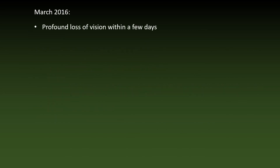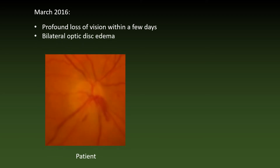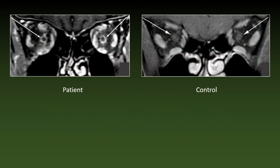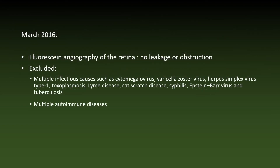About six weeks later, the patient had a profound loss of vision within a few days. Fundoscopic examination revealed bilateral edema of the optic discs; note the hemorrhage compared to a normal optic disc on the right. The diagnosis of optic neuritis was confirmed by MRI — note the peripheral enhancement of the optic nerves compared to a normal control. Fluorescein angiography of the retina did not show any vascular disease, leakage, or obstruction. Multiple infectious causes — CMV, varicella zoster, herpes simplex virus type 1, toxoplasmosis, Lyme disease, cat scratch disease, syphilis, Epstein-Barr virus, and tuberculosis — were excluded, as were multiple autoimmune diseases.